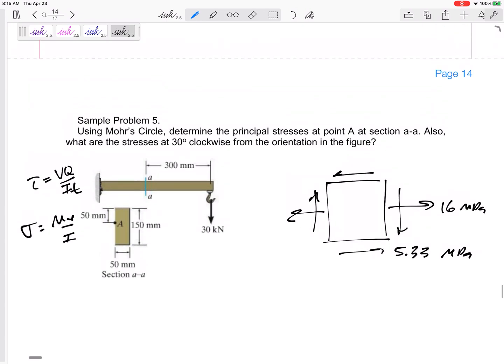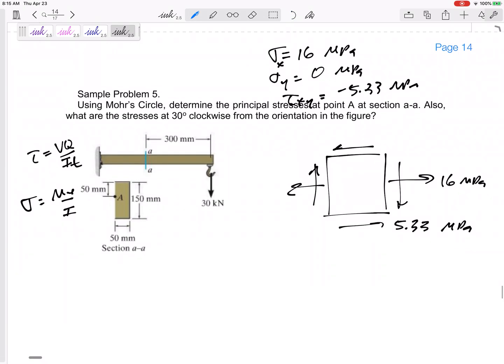So first of all, let's just reiterate what we are given in the figure. Sigma X is positive 16 MPa, Sigma Y is zero, and tau XY negative 5.33 MPa. Negative because it's pointing to that bottom corner, positive would point to the top right corner.